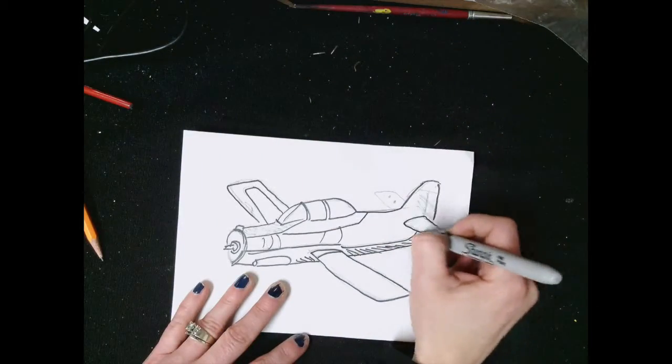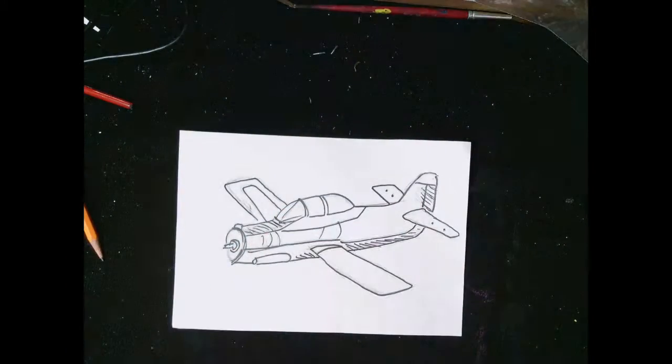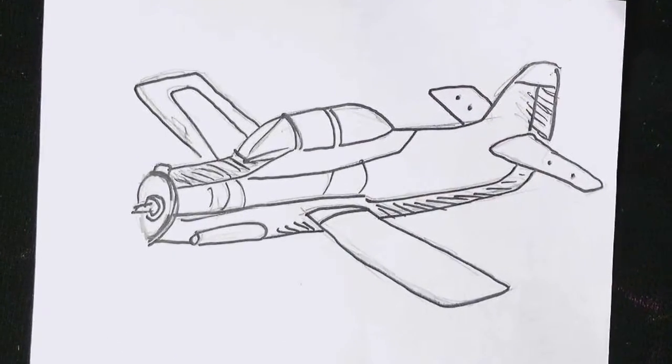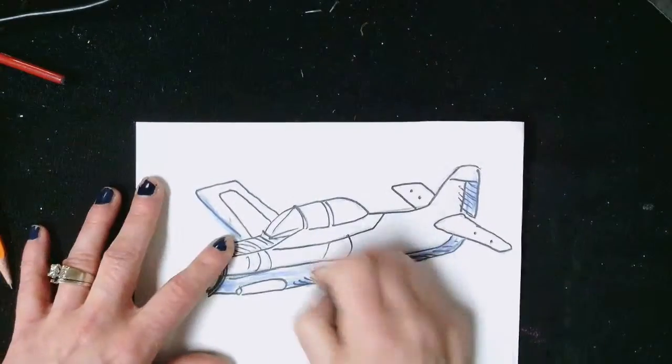Then I'll take a sharpie and outline over top of my pencil lines now that I have it completed. Once I have my designs in sharpie, I'm going to grab some crayons and start to apply a little bit of color onto my airplane.